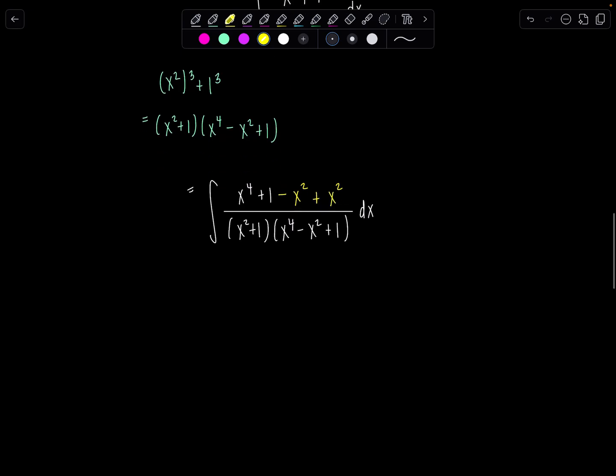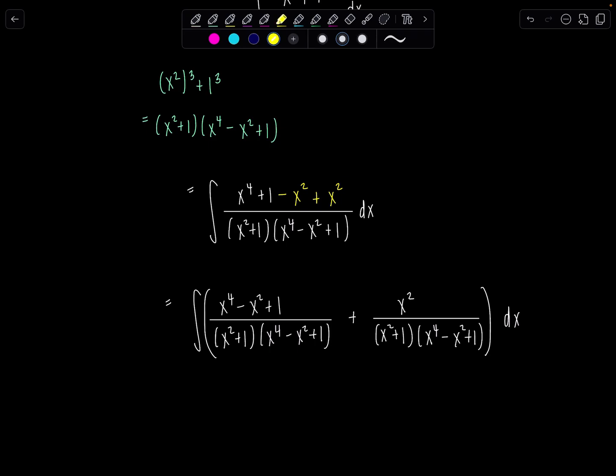And then we can split this up now into two integrals basically. So the first one's going to be x to the fourth, let me put minus x squared next plus one over x squared plus one, x to the fourth minus x squared plus one, plus x squared. Are you guys okay? Over x squared plus one times x to the fourth minus x squared plus one dx for all of this. So let me break down where everybody went just so you don't get lost. x to the fourth plus one minus x squared, that's all right here. And then this lonely little x squared is right here.